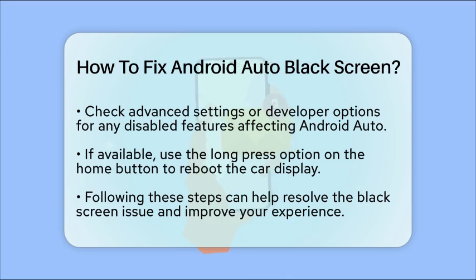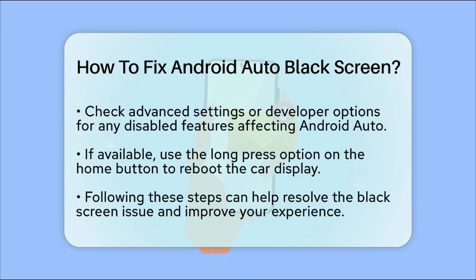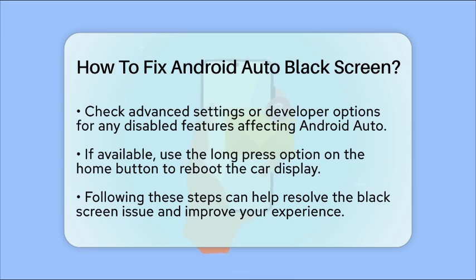Lastly, if your car's display has a long press option on the home button, try pressing it to reboot the display. This can sometimes resolve display-related issues. By following these steps, you should be able to fix the black screen issue with Android Auto and enjoy a smooth experience with your infotainment system.